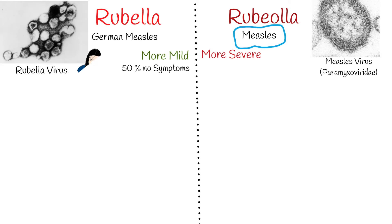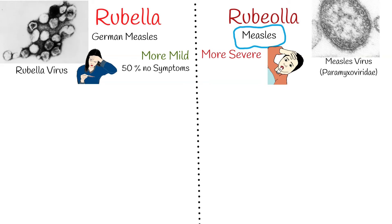Both diseases can follow the same general scenario: they begin with high fever which lasts the first several days, then a rash appears. Measles' fever can be higher compared to rubella — in many cases it can be greater than 40 degrees Celsius.